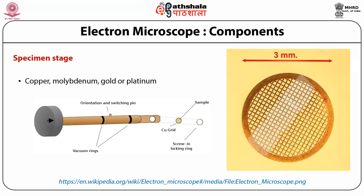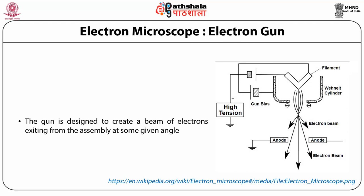The specimen stage has vacuum rings because the system is vacuum tight. The sample is put on a grid as shown, and two rings ensure that the vacuum is maintained inside. The sample is placed on the grid, which is kept in the stage, and the stage is pushed into the microscope where the electron beam will directly hit the grid containing the sample.